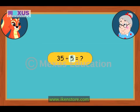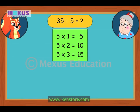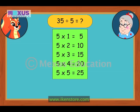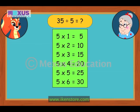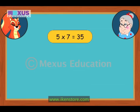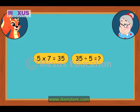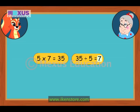5 is again the smaller number, so I will say the multiplication tables for 5 once more. 5 ones are 5, 5 twos are 10, 5 threes are 15, 5 fours are 20, 5 fives are 25, 5 sixes are 30, 5 sevens are 35. That is the answer! I know that 5 times 7 is 35, so 35 divided by 5 is 7. So I will put 7 sweets on each cake.